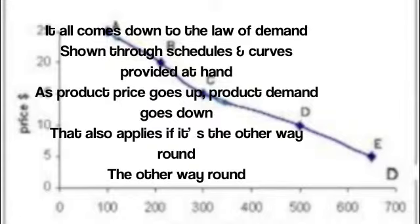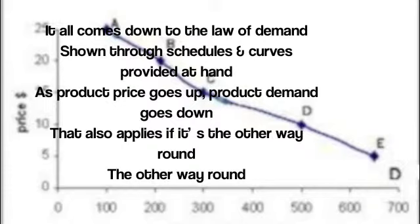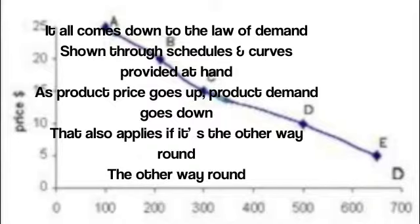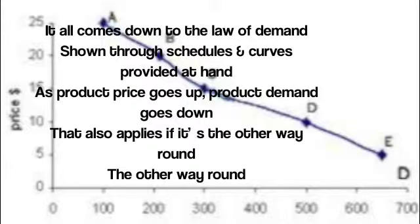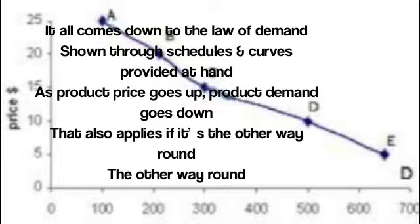It all comes down to the law of demand, shown through schedules and curves provided at hand. As product price goes up, product demand goes down. That also applies if it's the other way round.